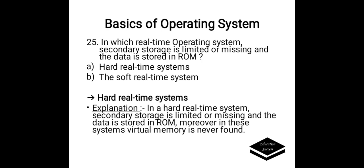In which real-time operating system is secondary storage limited or missing, and the data is stored in ROM? Options are A. Hard real-time systems, B. Soft real-time systems. Correct answer is A, Hard real-time system. In a hard real-time system, secondary storage is limited or missing and the data is stored in ROM. Moreover, in hard real-time systems, virtual memory is never found.